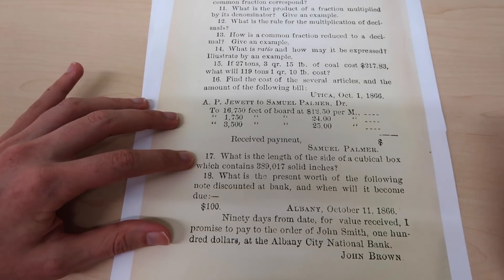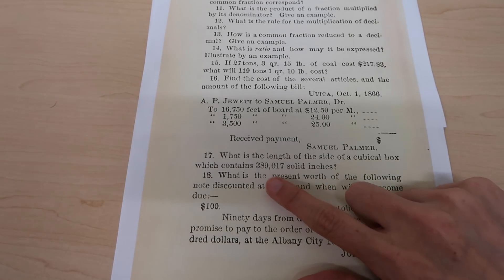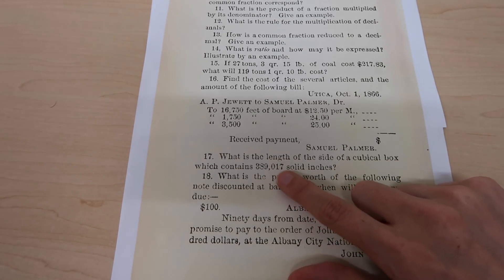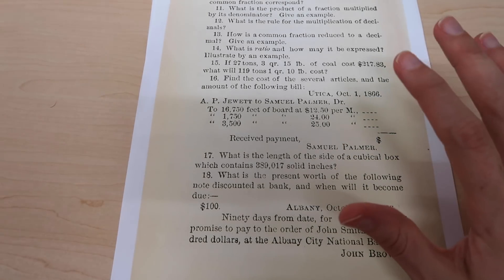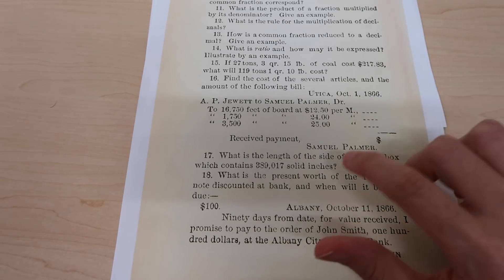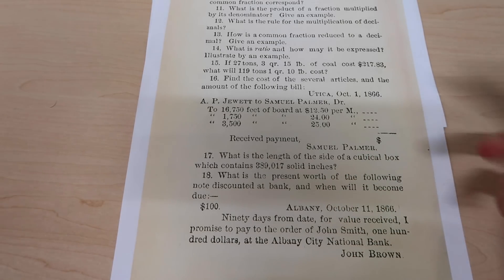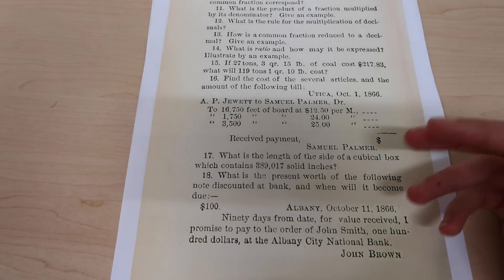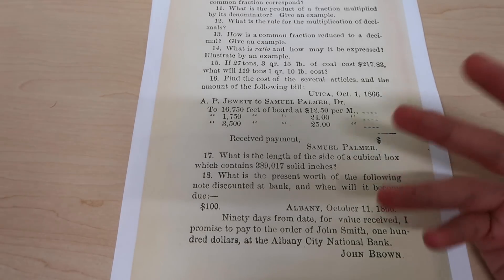Number 17: what is the length of the side of a cubicle box which contains 389,017 solid inches? This one seems pretty difficult to do without a calculator, like so much more than the other ones. Doing a cube root without a calculator is not something that I am well versed in, but you would have to do it through either long division type sums or through some sort of estimation and checking method.